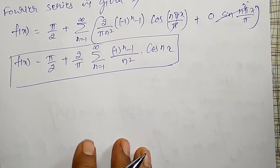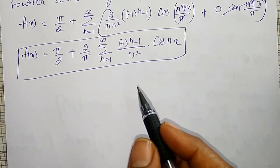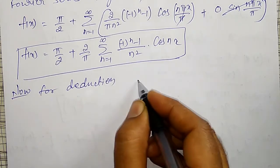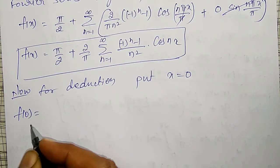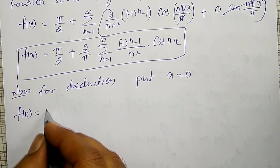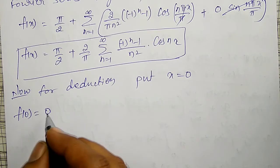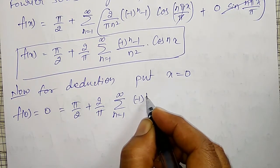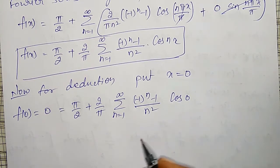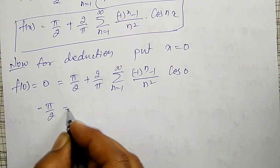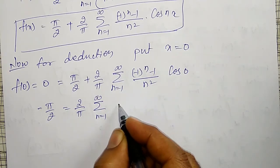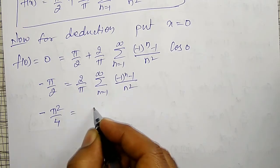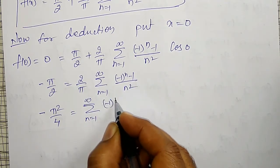Using this Fourier series, I need to do the deduction. To eliminate the cos(nx) term, I put x = 0. Then f(0) = 0 (since from the first condition, f(0) = x = 0). Substituting, 0 = π/2 + (2/π) × summation n=1 to infinity of ((-1)ⁿ − 1)/n² × cos(0). Since cos(0) = 1, simplifying gives −π/2 = (2/π) × summation of ((-1)ⁿ − 1)/n², and rearranging: −π²/4 = summation of ((-1)ⁿ − 1)/n².